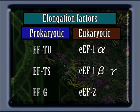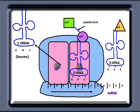The elongation cycle in eukaryotes is quite similar to that in prokaryotes, but instead of the three elongation factors EFTU, EFTS, and EFG, there are eEF1-alpha, eEF1-beta-gamma, and eEF2 respectively. These factors in eukaryotes are analogs to prokaryotic elongation factors. Further, eukaryotic ribosomes do not have an E-site, so uncharged tRNAs are expelled directly from the P-site.